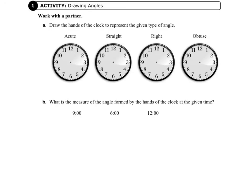Today we'll be starting on page 143 in your record and practice journal. Activity 1, we're drawing angles.